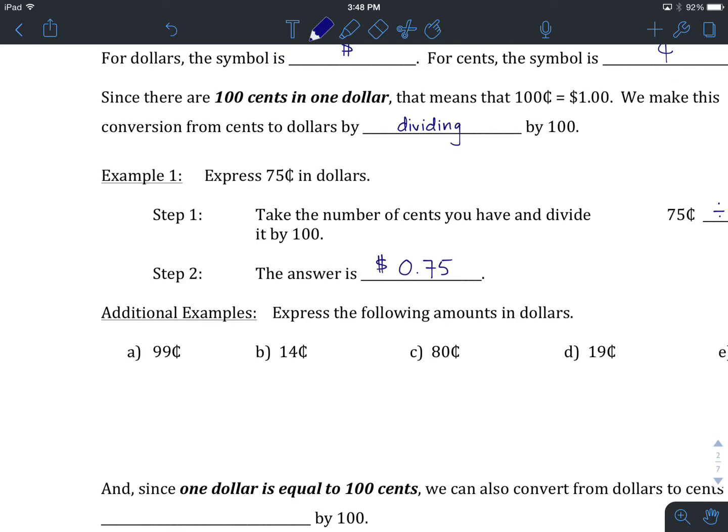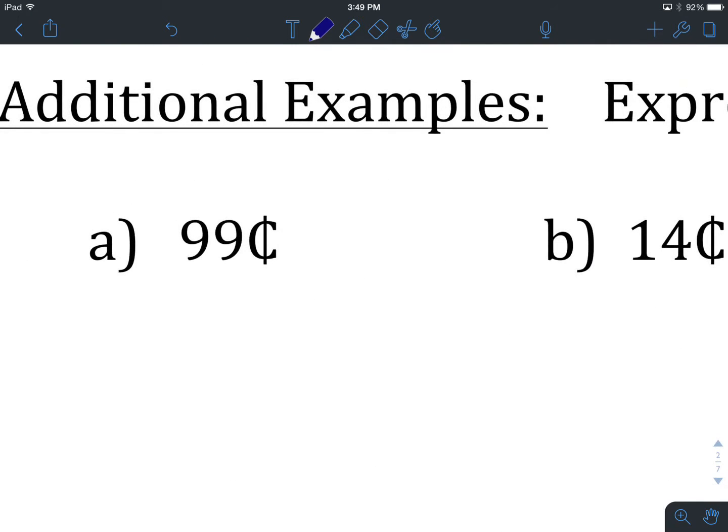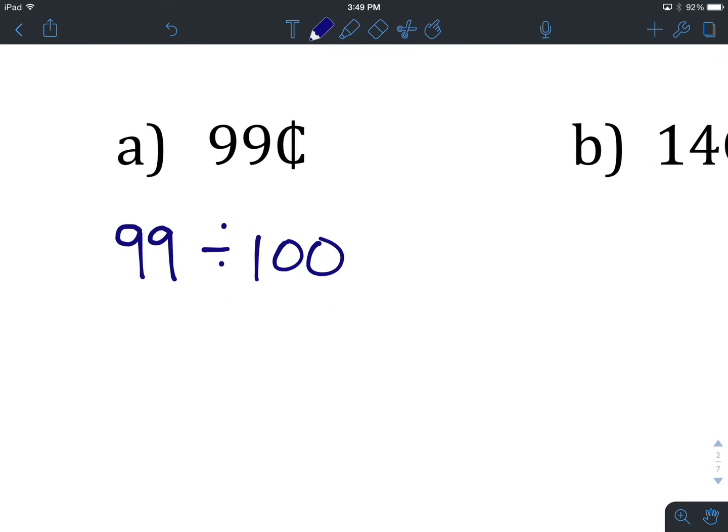If we're looking at 99 cents and we're being asked to express this in dollars, we take the amount in cents, which is 99. We're going from cents to dollars, so we divide by 100. It gives us then a final answer, new notation, dollars, $0.99.